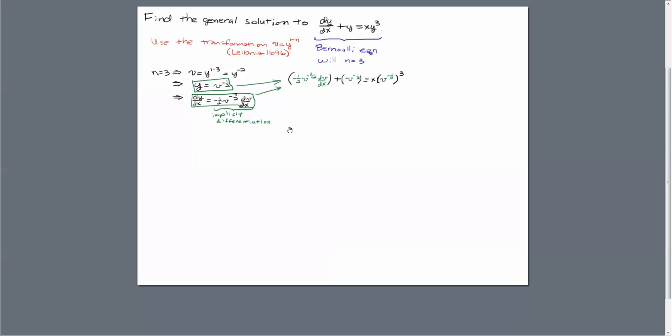Okay, so here we go. dy dx becomes that term, y becomes v to the minus 1 half, and then we're going to raise that to the third power. Let's simplify this a little bit, and you can see that that is now v to the minus 3 half power, and we have a v to the minus 3 halves power here, and a v to the minus 1 half power.